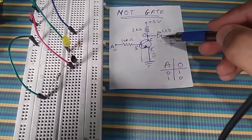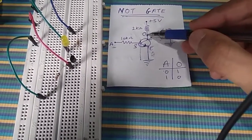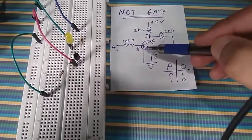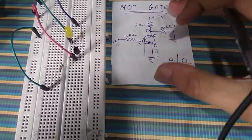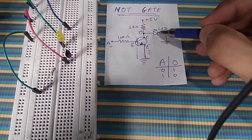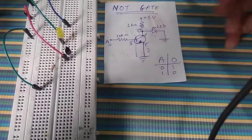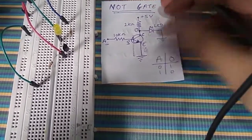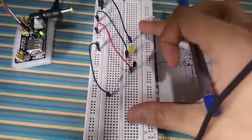For the NOT gate, we need an output, so to observe the output I have connected an LED. This LED is connected to the output terminal, which is connected directly to the collector terminal of the transistor, and further this LED is connected to ground. Whenever the LED is on, we have a high output, and if the LED is off, the output is low.